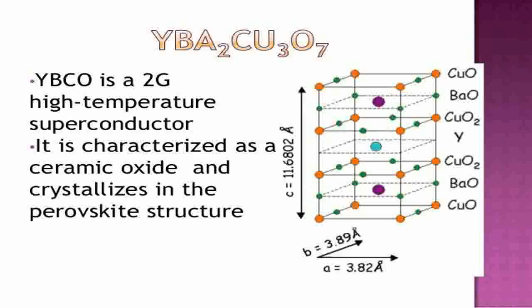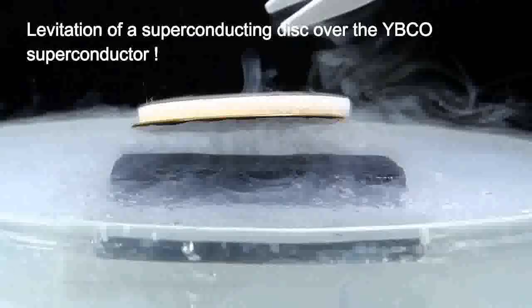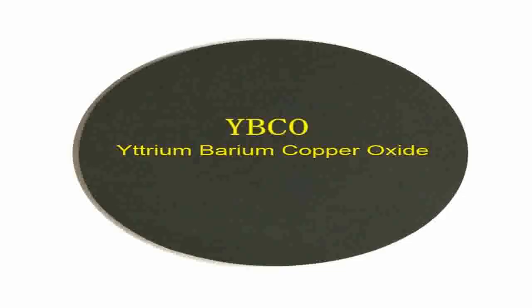YBCO has numerous industrial and scientific applications. First, in the electrical power industry, YBCO is used in the manufacturing of high-temperature superconducting wires, which have higher power transmission capacities and lower energy loss compared to conventional copper or aluminum wires. These HTS wires are useful in making power cables, transformers, and motors more efficient.